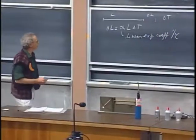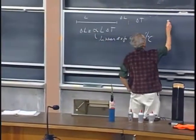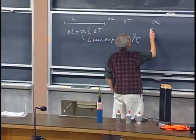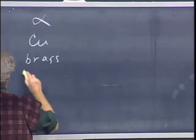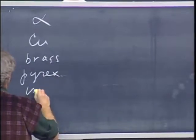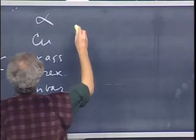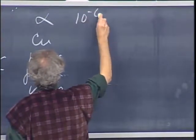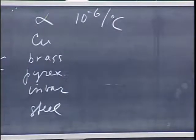The various values for alpha differ a great deal. I'll give you some values for alpha: copper, brass, pyrex, invar, and steel. They are in units of 10 to the minus 6 per degree centigrade, and we will use some of them today.